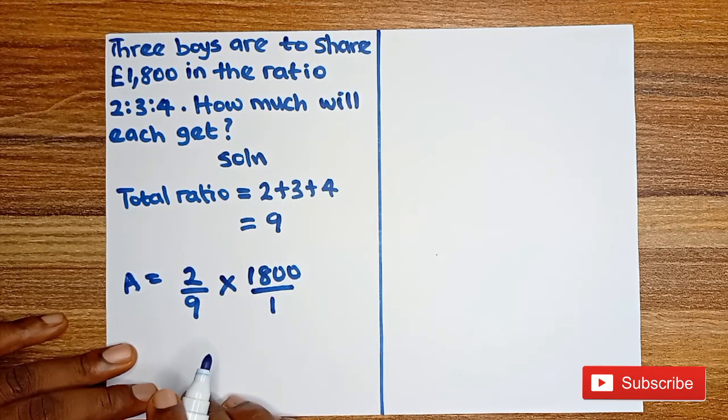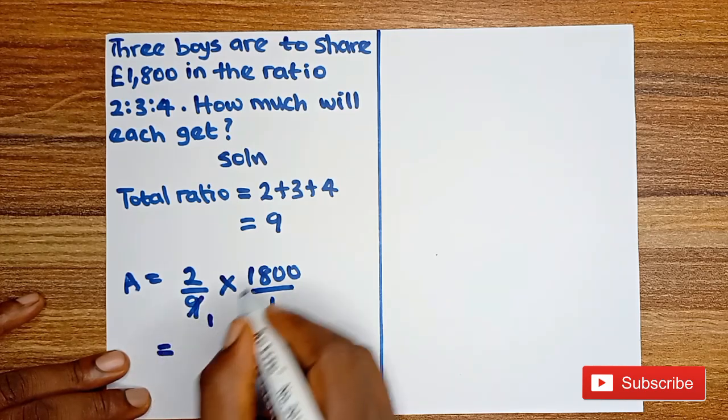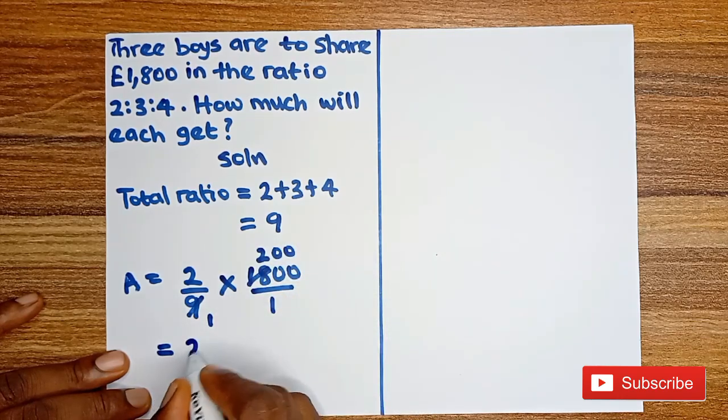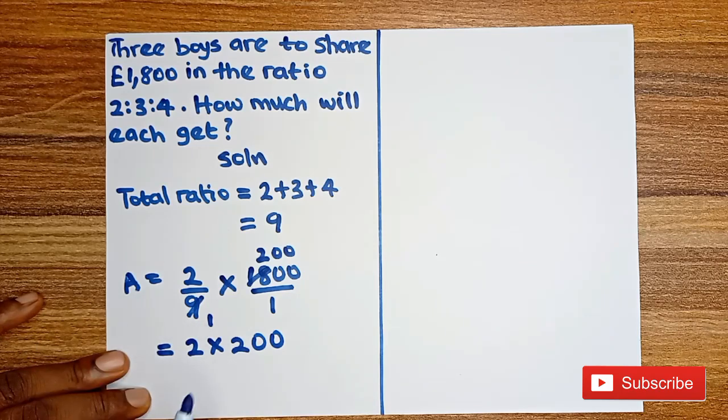9 will go here, 1, 9 here will give you 200. So we have 2 multiplied by 200. So Boy A with the ratio of 2 is going to take 2 times 200, which will give us £400.